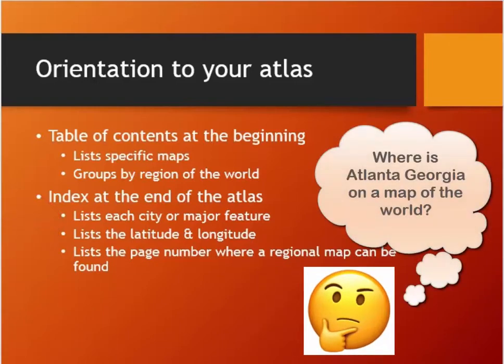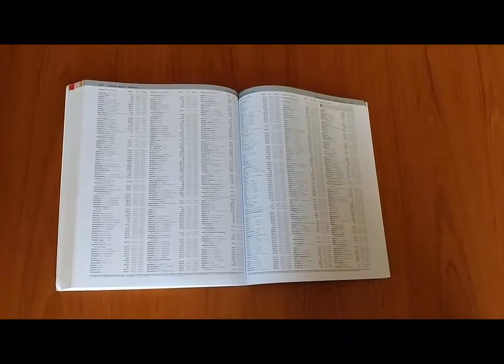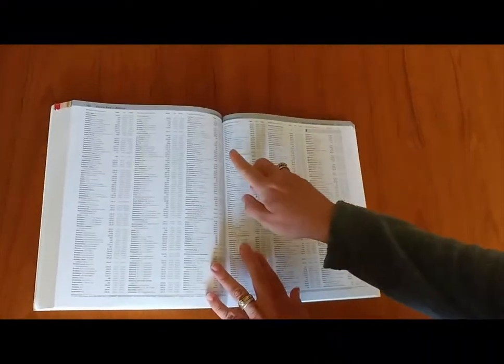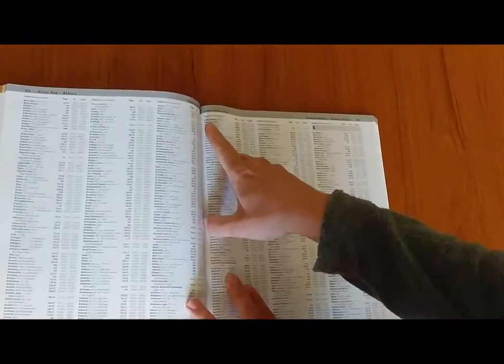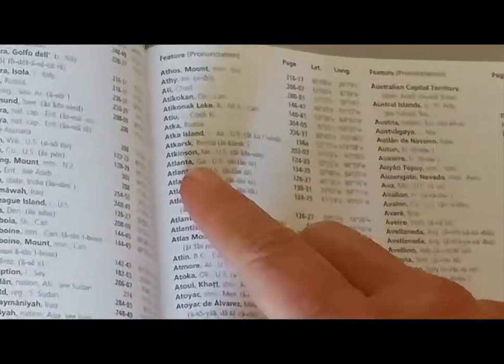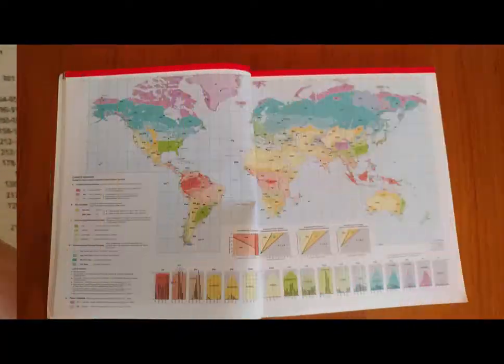Let's assume that you don't know where Atlanta, Georgia, USA is located. We can start by looking it up in the index. Here it is at 36 degrees 46 minutes north, 84 degrees 25 minutes west.